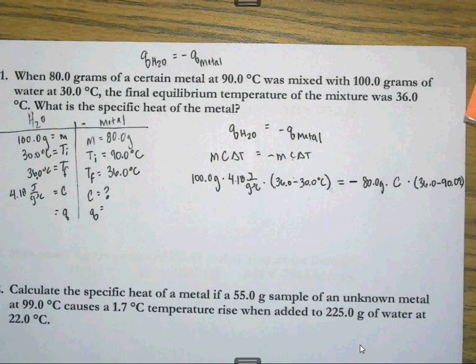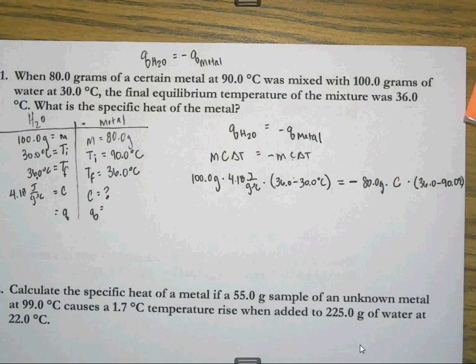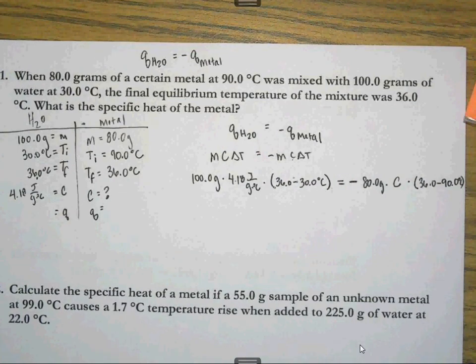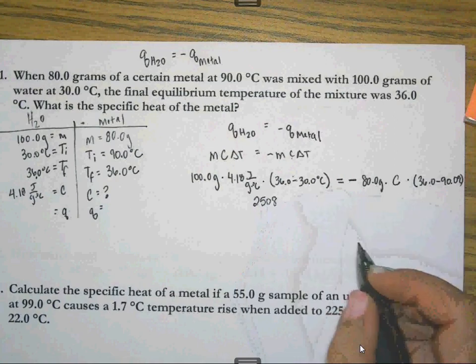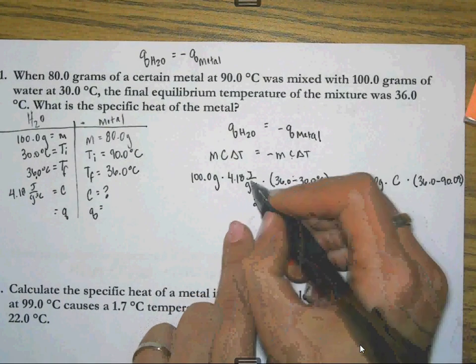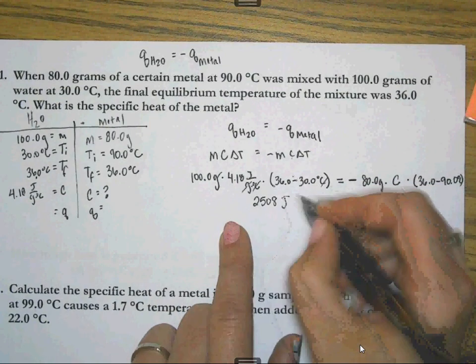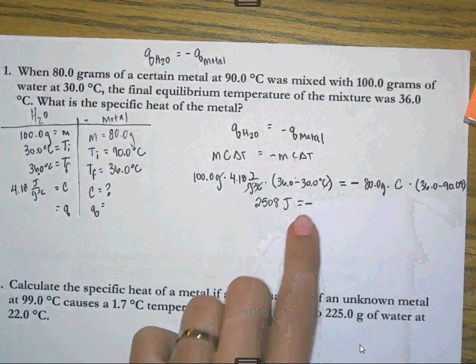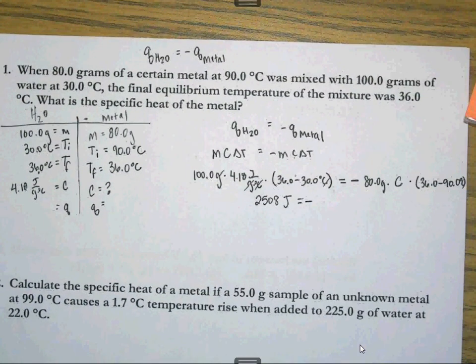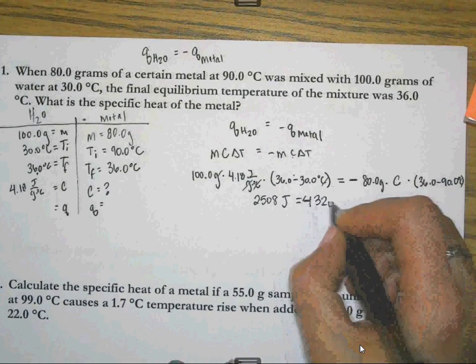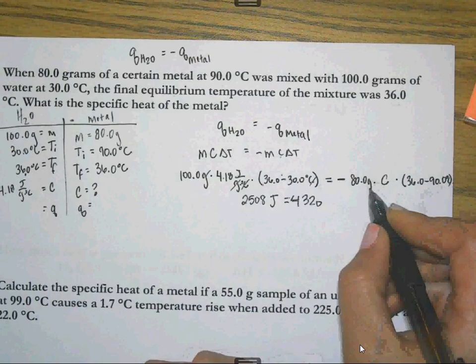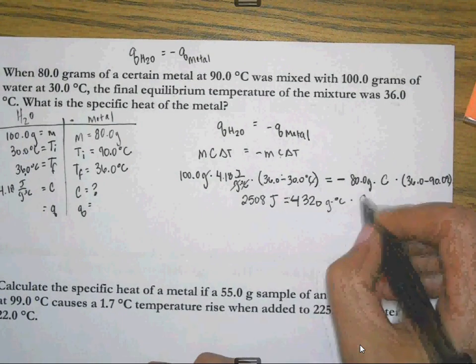All right. And then basically it's time to solve for C. Now I have a lot of students who are having trouble with the math of this. If that's the case, then you need to come see me. For the sake of some people, I am going to simplify a little bit. If I multiply all my numbers, that comes out to be 2508. Well, grams cancels and Celsius cancels. So that's that many joules. And then I've got a negative sign there. We'll see what happens with it. I shouldn't have written it already. I've got negative 80 times 36 minus 90. And that comes out to be a positive 4,320. Well, neither one of those units cancel. So that's grams times degrees Celsius times C.